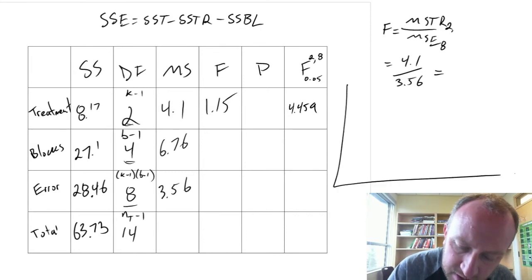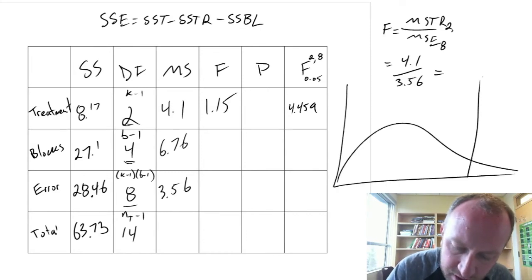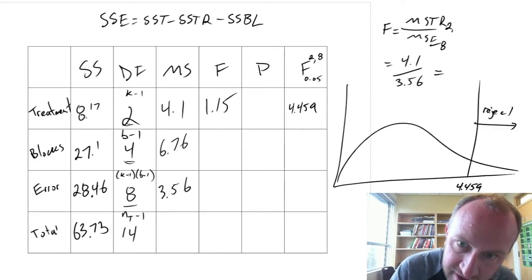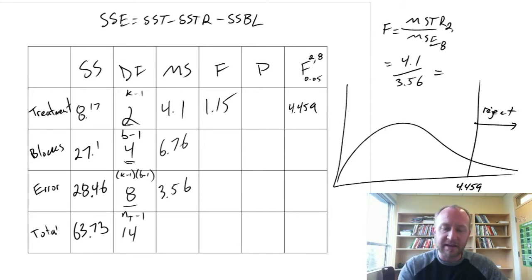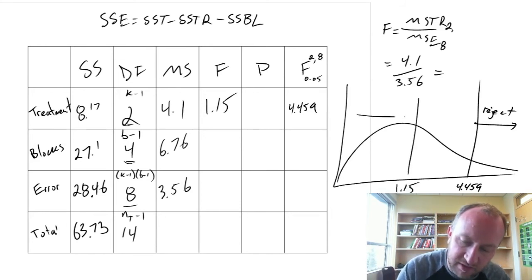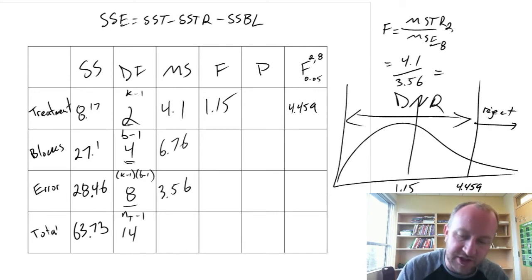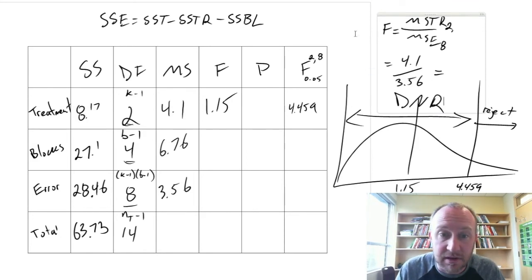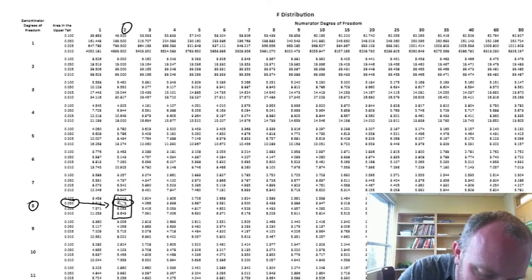So here we have our F-distribution. Critical value 4.459. We reject for a test statistic larger than that. Here our test statistic is 1.15. So that looks like it falls into our do not reject space. Let's get a p-value and hopefully we'll get a consistent result. So our test statistic of 1.15. Let's see.